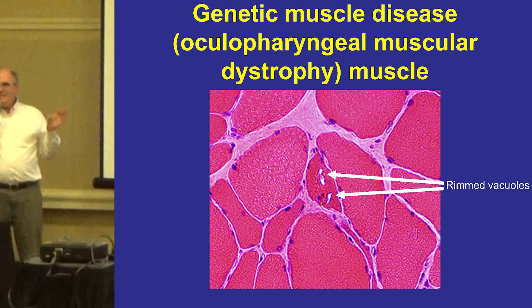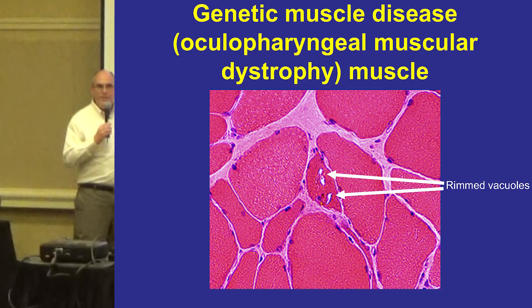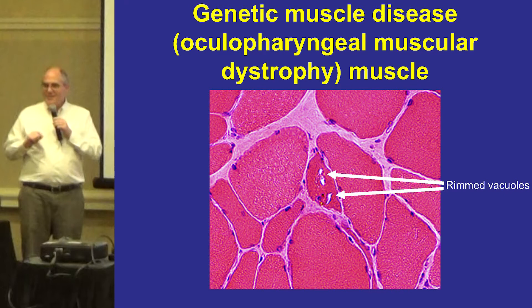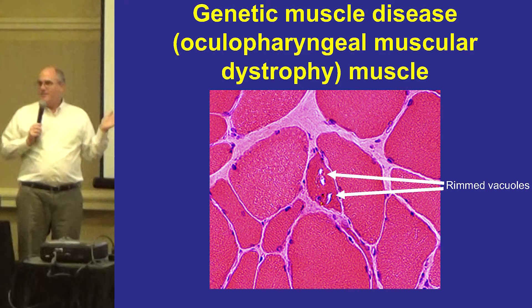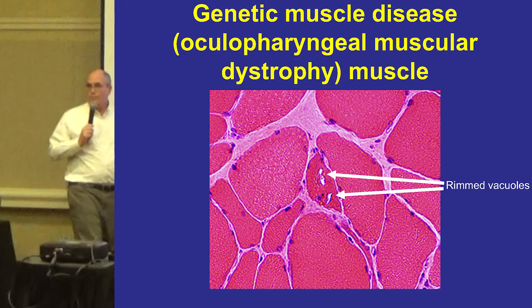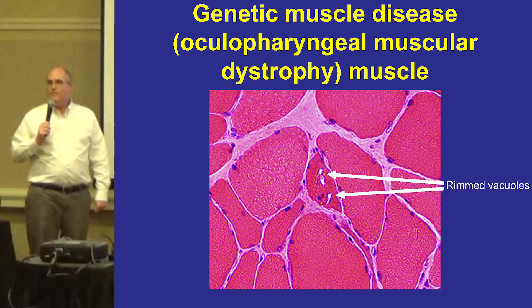This is a muscle biopsy from a patient with a genetic muscle disease. There are no inflammatory cells, but it doesn't look normal — some fibers are small, they're not all the same size, and you can see holes called rimmed vacuoles. You might have heard of these because they're also found in inclusion body myositis. But you can find them in genetic muscle diseases, some of which also have distal weakness just like IBM. This is not an autoimmune disease — it's caused by a gene defect. The rimmed vacuoles contain abnormal accumulations of abnormal proteins. This disease is called oculopharyngeal muscular dystrophy, or OPMD.